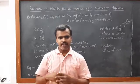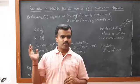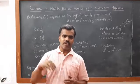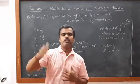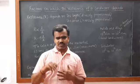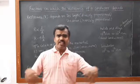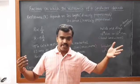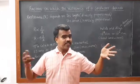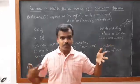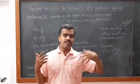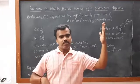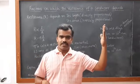Area increases, resistance will decrease. Resistance decreases means current will easily flow through. If length is increased, resistance is high and current cannot easily move. Because resistance is high, current will decrease.